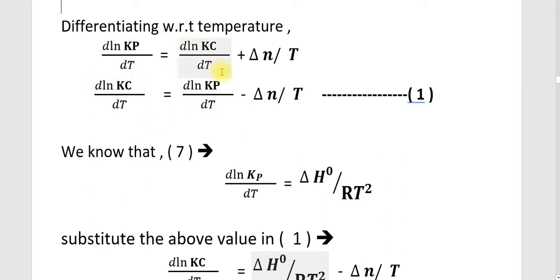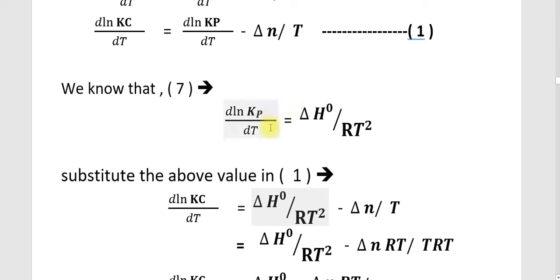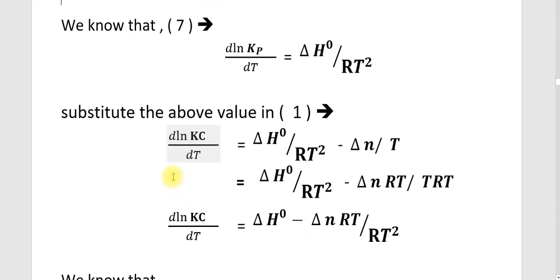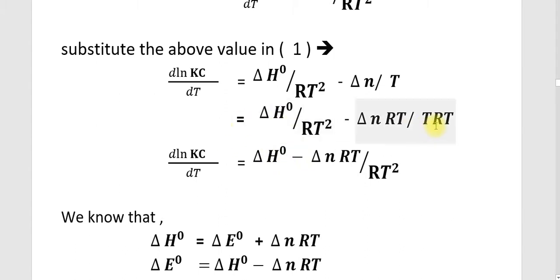We already know equation 7: d(Ln Kp)/dT equals delta H° by RT². Substituting this into our expression, we get: d(Ln Kc)/dT equals delta H° by RT² minus delta N by T. After that, we multiply the second term's numerator and denominator by RT, giving delta H° by RT² minus delta N·RT by T·RT.